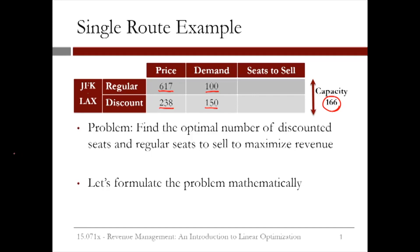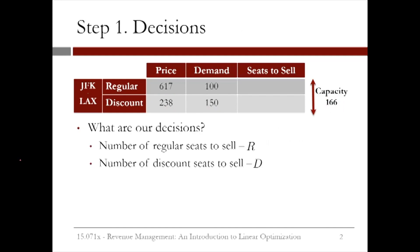Let's go ahead and formulate this mathematically as a linear optimization problem. The first step is to decide what our decisions are, or the variables in our model. We need to decide how many regular seats we want to sell — we'll call the number of regular seats we sell R. We also need to decide the number of discount seats we want to sell — we'll call the number of discount seats we sell D.